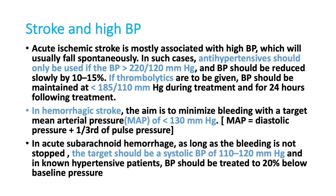If you try to reduce BP drastically in ischemic stroke, the penumbra will also suffer from ischemia and that region may die. So never reduce BP drastically. If the patient has ischemic stroke and BP is more than 220/120 mmHg, reduce BP slowly by 10 to 15 percent. If thrombolyzing the patient, BP should be maintained below 185/110 mmHg for the next 24 hours. In hemorrhagic stroke, maintain mean arterial pressure below 130 mmHg. In acute subarachnoid hemorrhage, target systolic BP should be ≤110 to 120 mmHg.